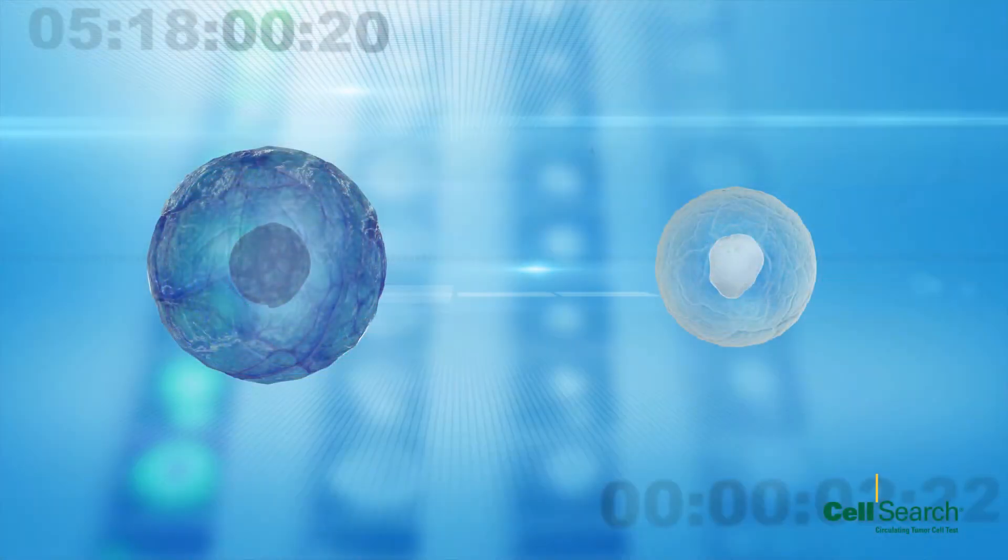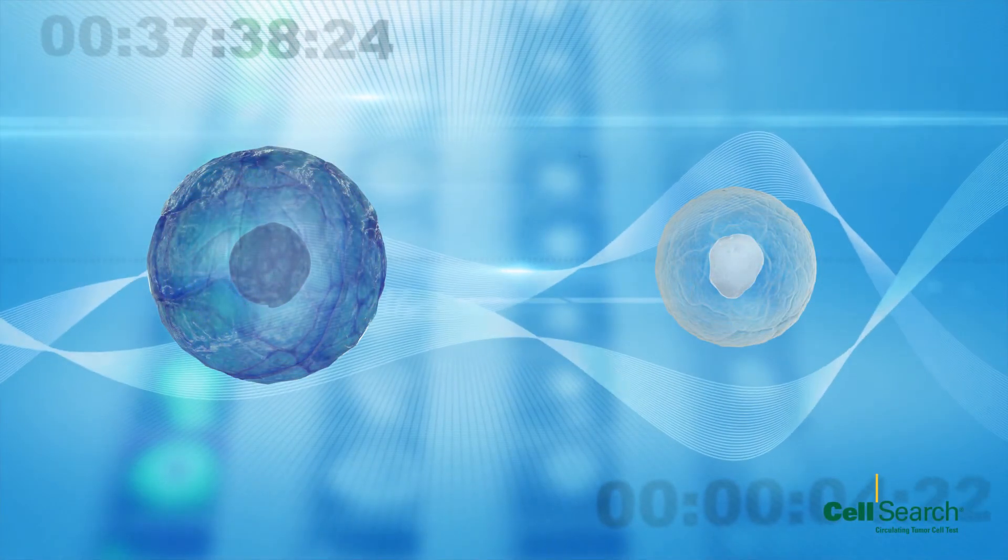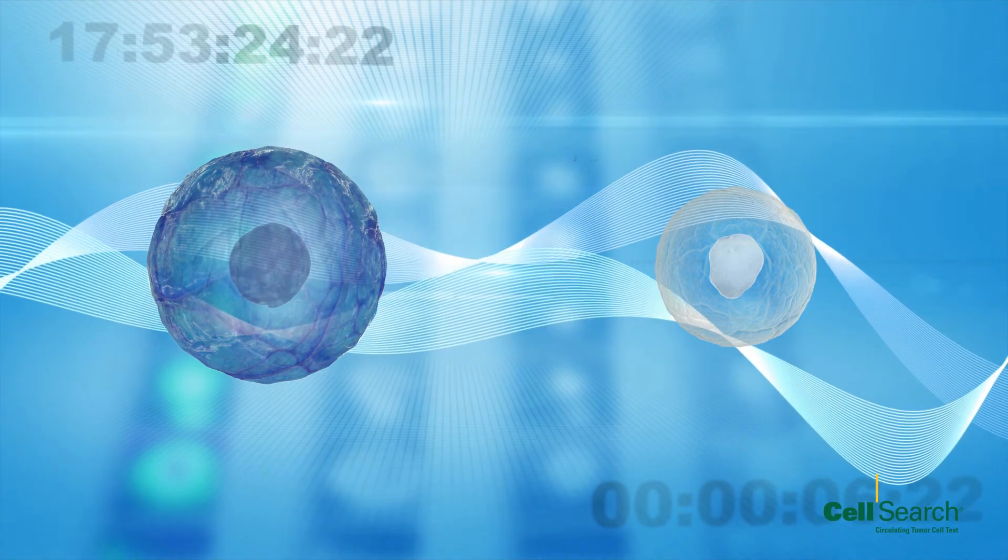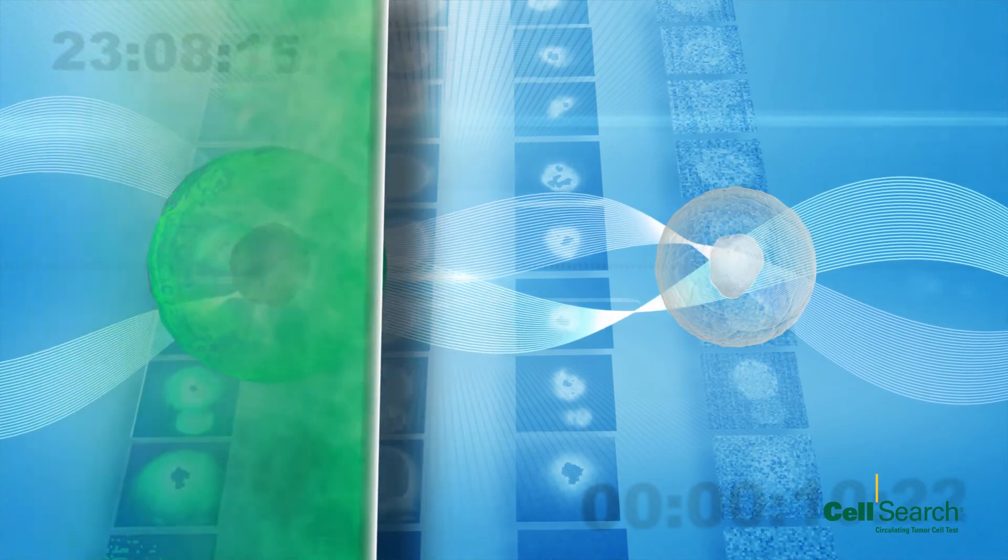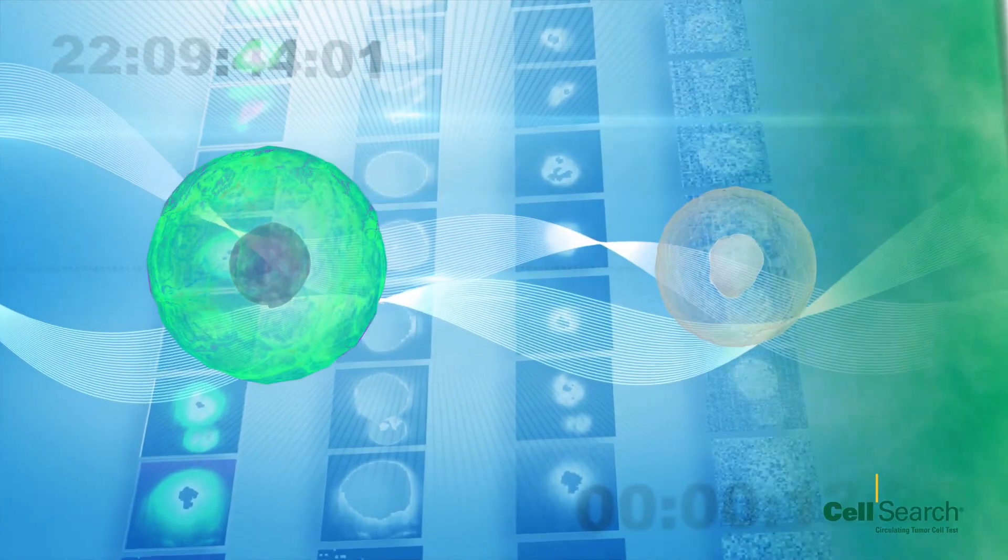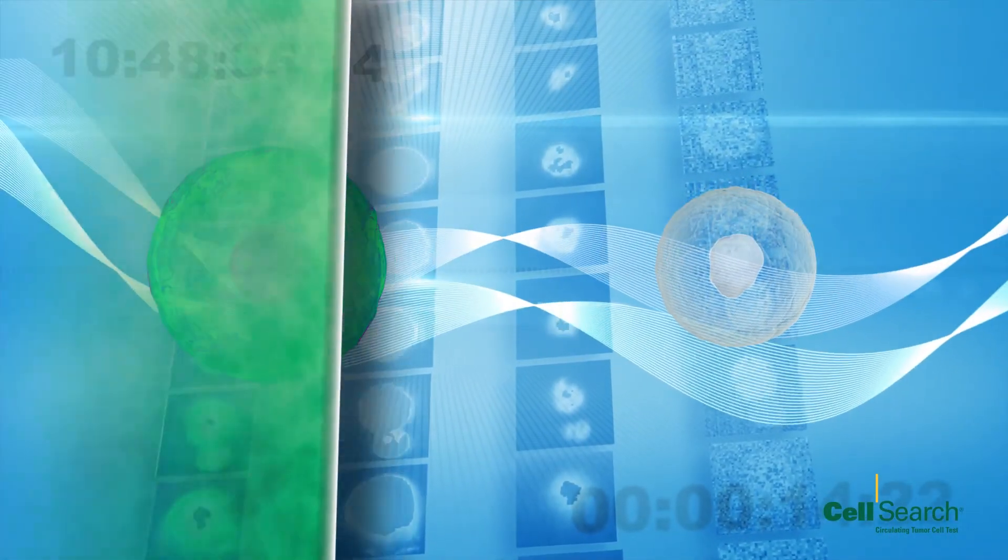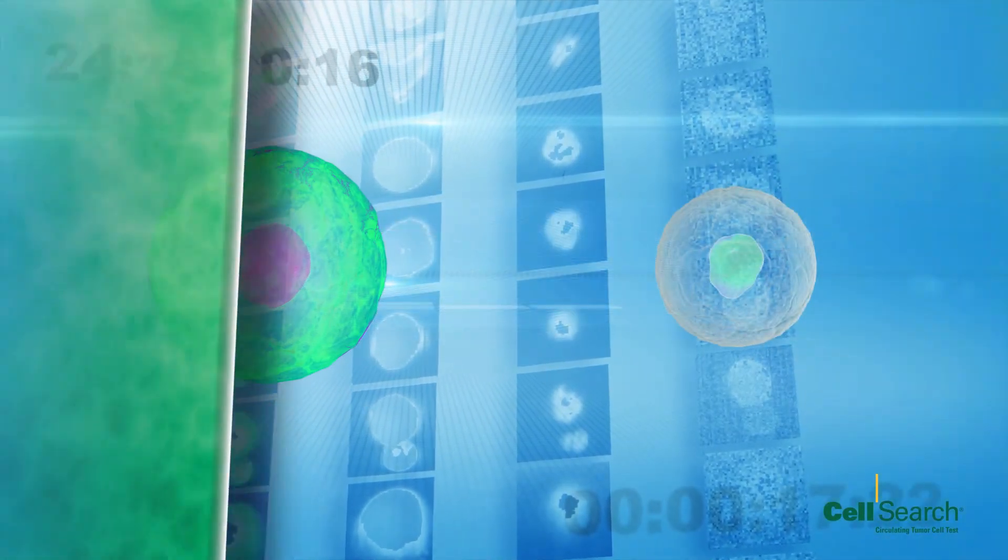The CellTracks Analyzer II records fluorescent events and presents images to the user for classification. By this process, CTCs are identified as cells that are positive for cytokeratin and DAPI but negative for CD45.